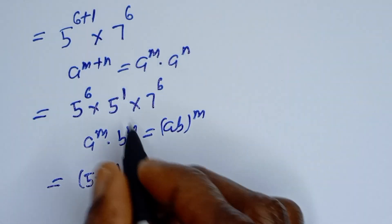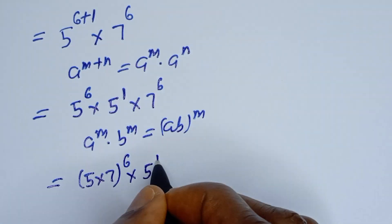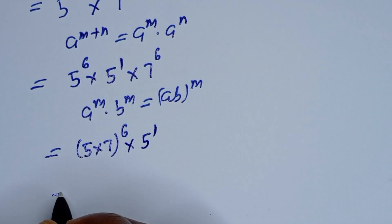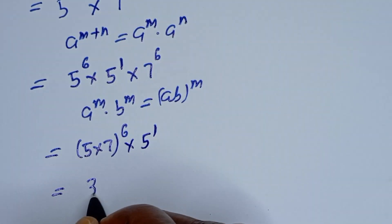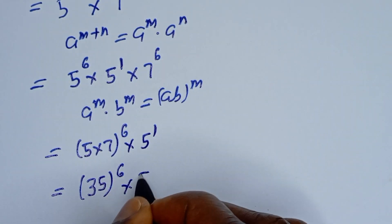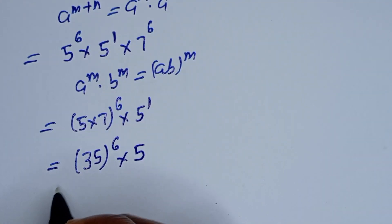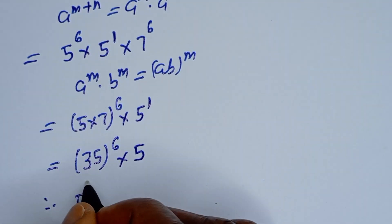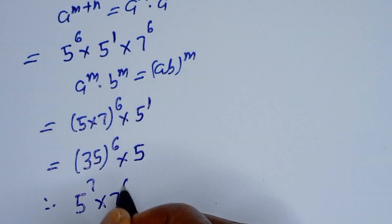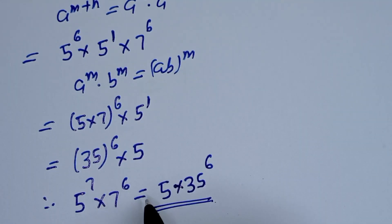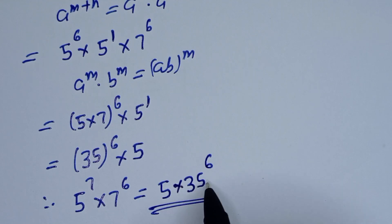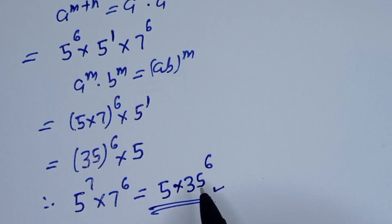So this becomes five multiplied by seven, to the power of six, multiplied by five to the power of one. Five times seven is 35, so we have 35 to the power of six, multiplied by five. Therefore, five to the power of seven multiplied by seven to the power of six equals five multiplied by 35 to the power of six. This is the final answer. I hope you enjoyed the video.